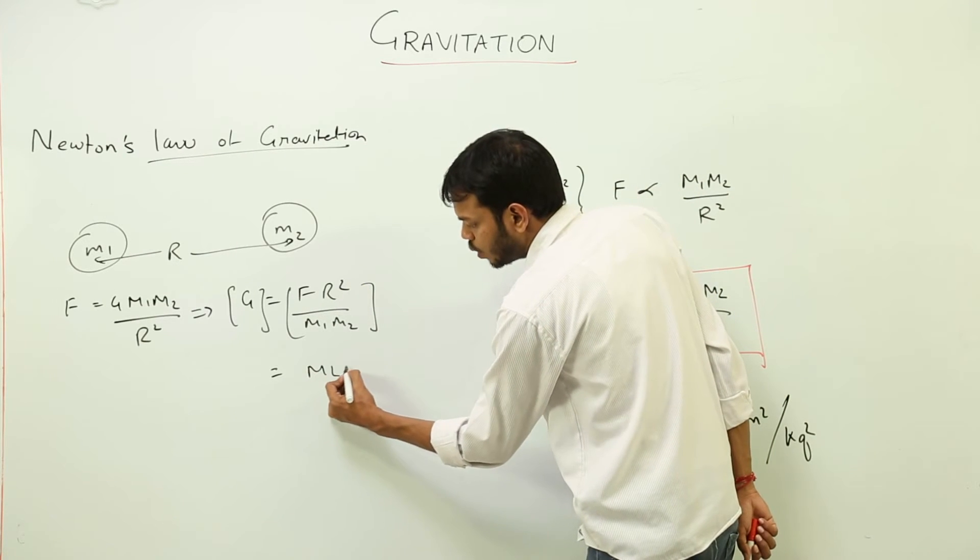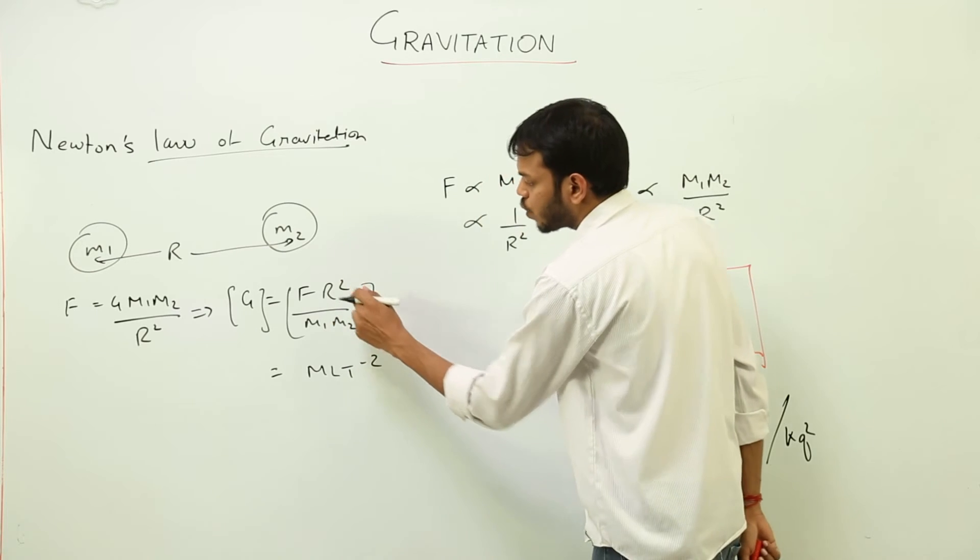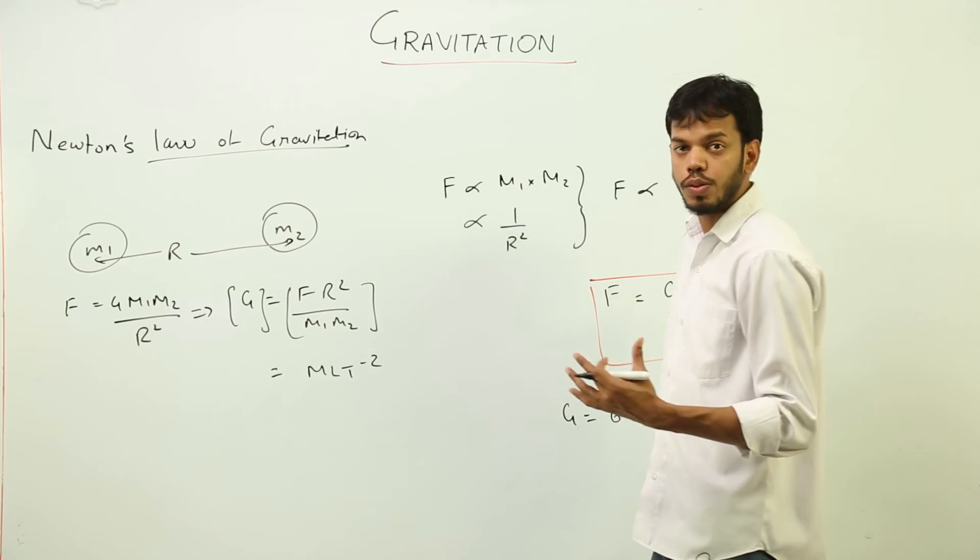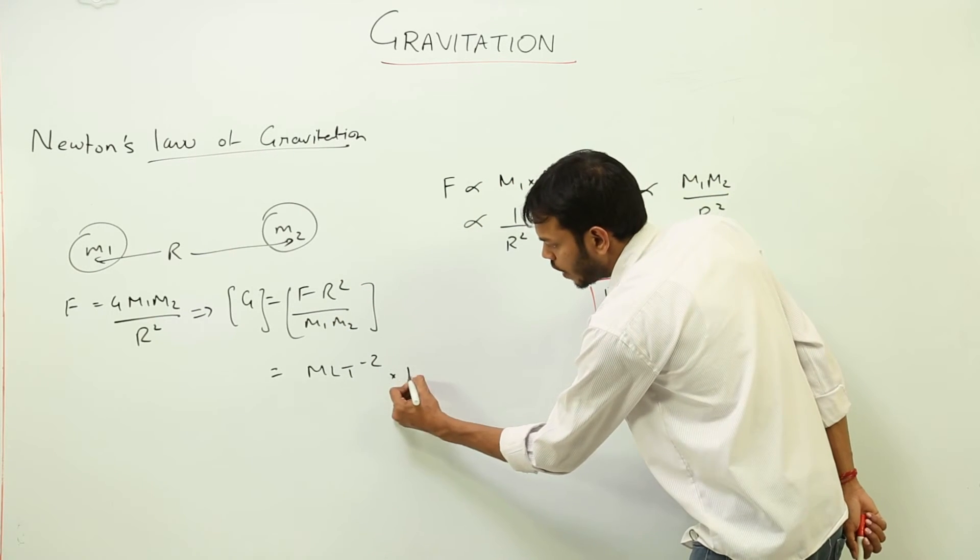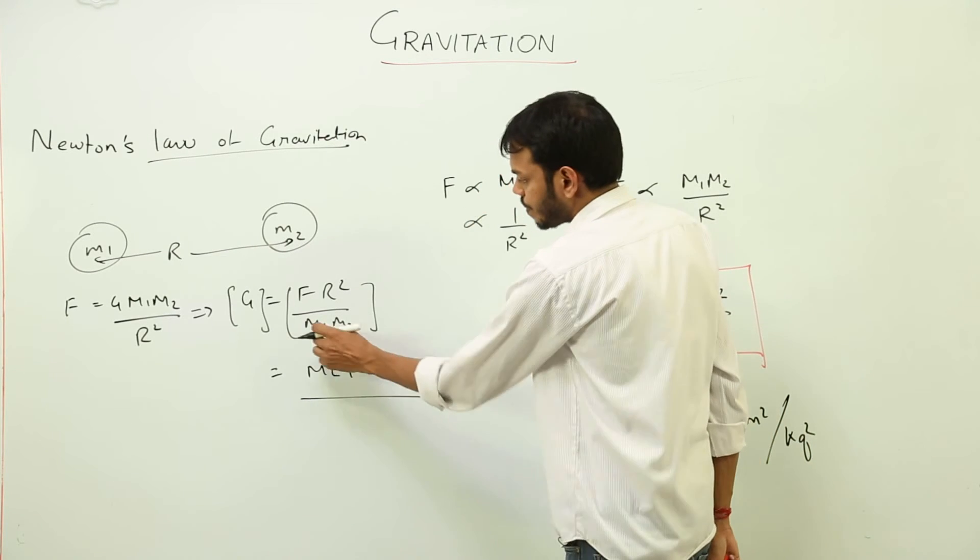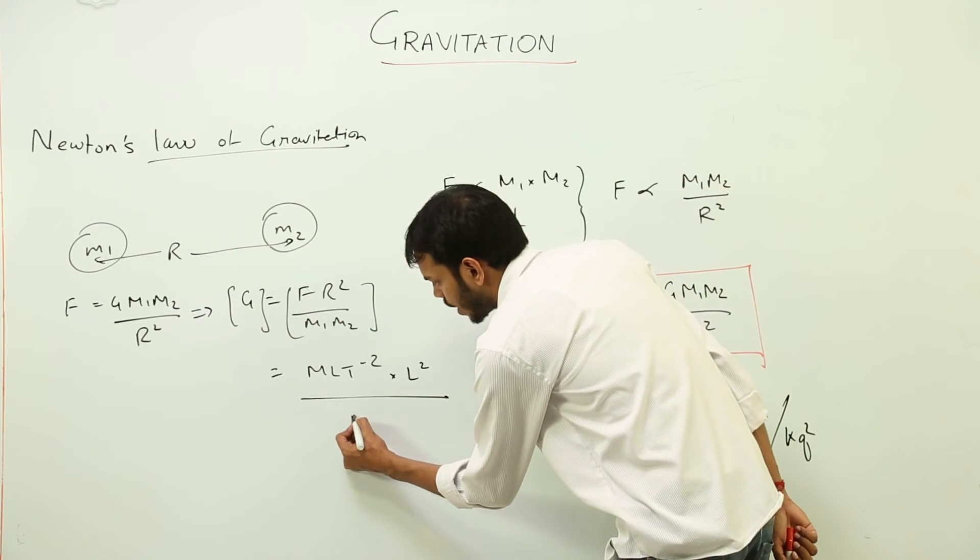Here force is what? MLT to the minus 2. Then R square. R square is distance square. Distance is what? Meter. That is length square upon what is mass into mass? M square.